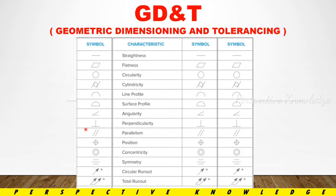For GD&T symbols, the 14 main symbols are: straightness, flatness, circularity, cylindricity, line profile, surface profile, angularity, perpendicularity, parallelism, position, concentricity, symmetry, circular runout, and total runout.